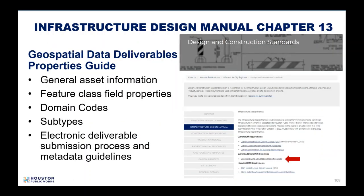New this year is the Geospatial Data Deliverables Properties Guide. This document provides a detailed breakdown of the geospatial data schemas associated with stormwater, wastewater, and geotechnical/environmental asset feature classes maintained by the City of Houston Public Works department. The Properties Guide is meant to be read in conjunction with Chapter 13 of the IDM and will be updated as needed to communicate detailed schema changes to the public. It can be found on the Design and Construction Standards page on the City of Houston Permitting Center website under the Infrastructure Design Manual tab.